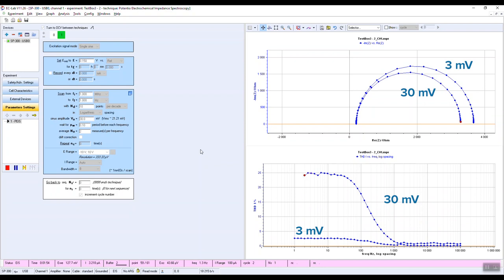Now the question is which of the two Nyquist plots is the right one? Clearly, the one for which the THD remains low over the frequency range. Thus, the right impedance measurement is the one obtained at 3 millivolts amplitude.